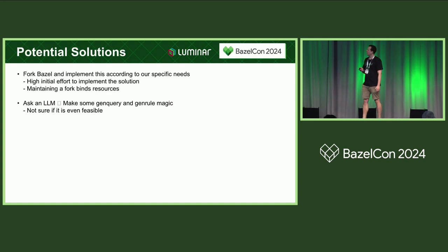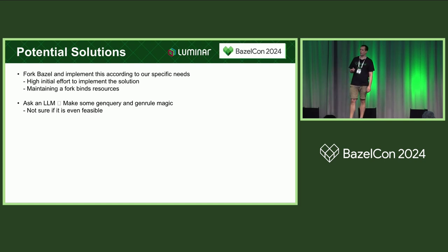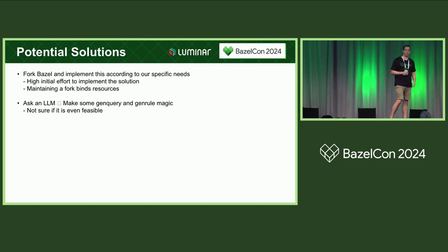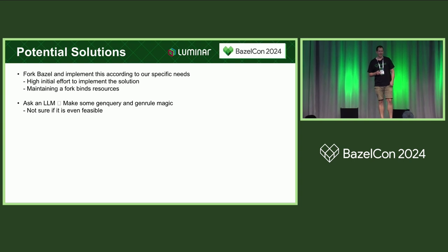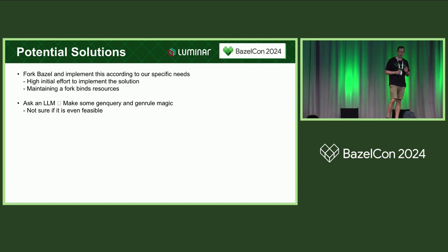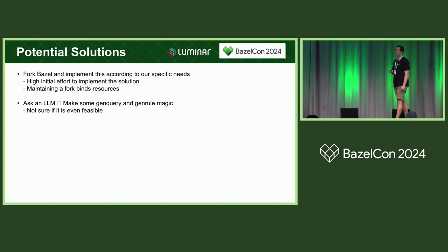So what options do we have? Option number one — maybe the brute force option — is to simply fork Bazel and implement it according to your needs. But this is not a great solution because it has a high initial effort, and maintenance also takes time, since we want to stay up-to-date with the ongoing development of Bazel. The second option is to ask an LLM, because that seems to be what everyone is doing nowadays. I got an output using some genquery and genrule magic, but I wasn't even sure if it would work, so I quickly dropped that.